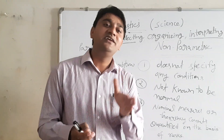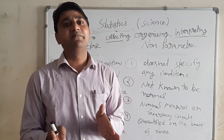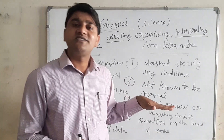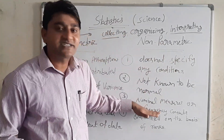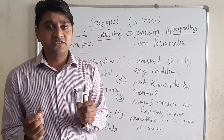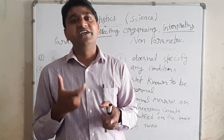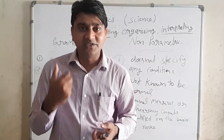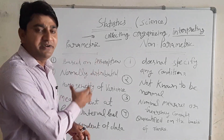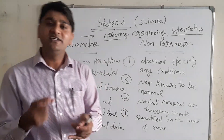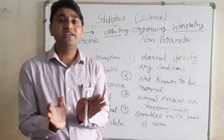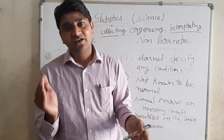We have discussed parametric statistics and non-parametric statistics. We need to understand the assumptions of parametric statistics as well as the characteristics of non-parametric statistics. Whenever we apply some kind of statistics, we first need to understand the nature of the data — what types of data we are getting from the populations. These are some of the assumptions of the parametric test. We have discussed the difference between parameter and statistics, and the differences between parametric and non-parametric statistics.